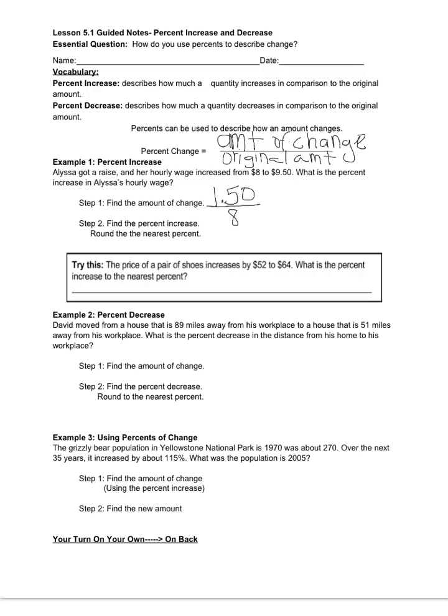So I'm going to take 1.5 divided by 8. And on my calculator, this is what I get, 0.187 and then it goes on. So as a percent, this is 19 percent, because I would round that 0.187 to 0.19, and a percent is always out of a hundred, so since that's 19 hundredths, it becomes 19 percent.